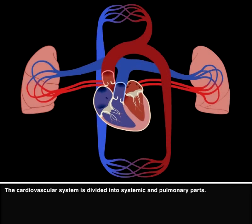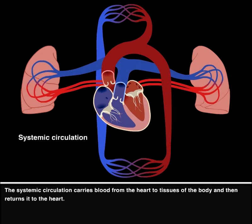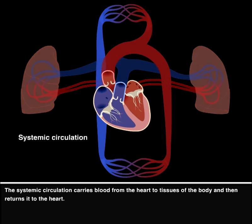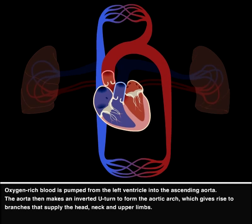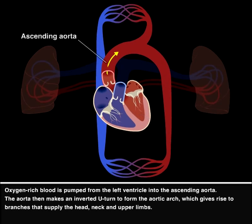The cardiovascular system is divided into systemic and pulmonary parts. The systemic circulation carries blood from the heart to tissues of the body and then returns it to the heart. Oxygen-rich blood is pumped from the left ventricle into the ascending aorta.